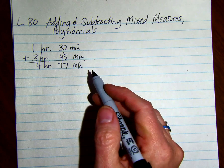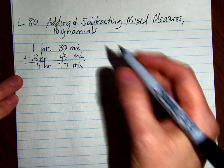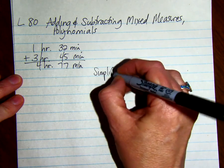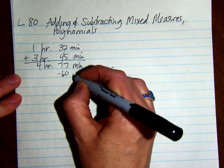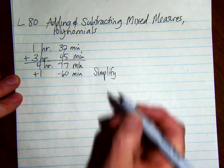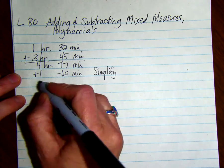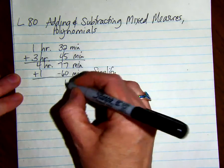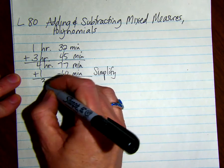However, 77 minutes is more than an hour, so we have to simplify. We're going to take away 60 minutes and add that hour to the 4 hours. So we'll have 17 minutes, 3 hours.